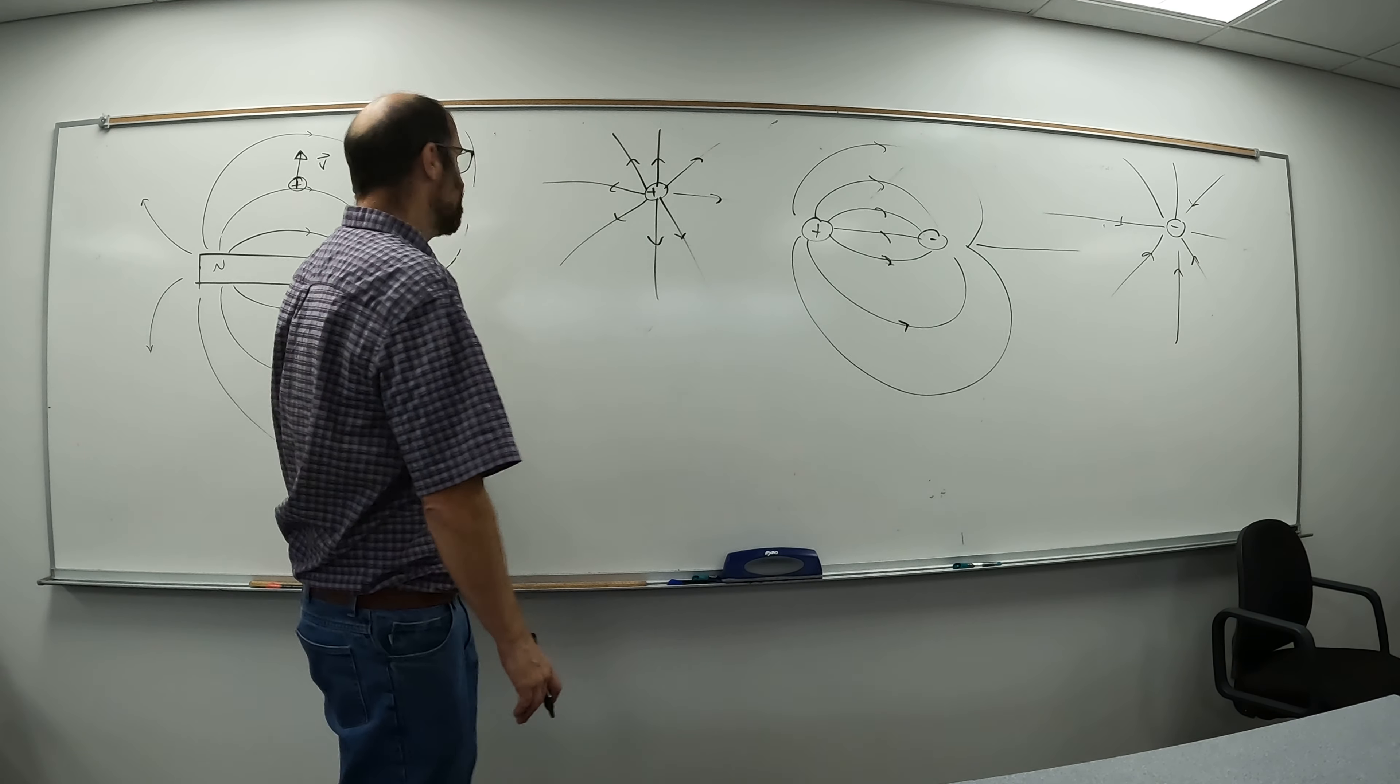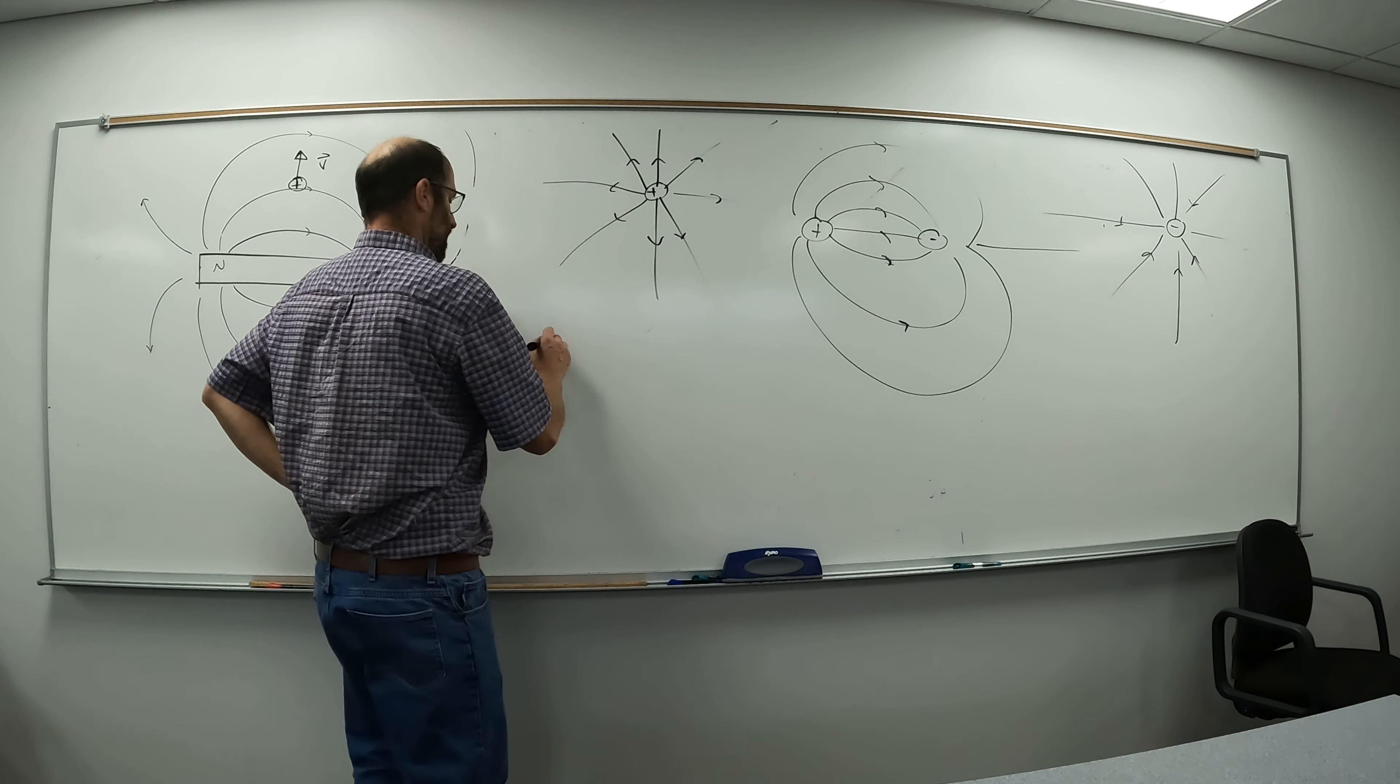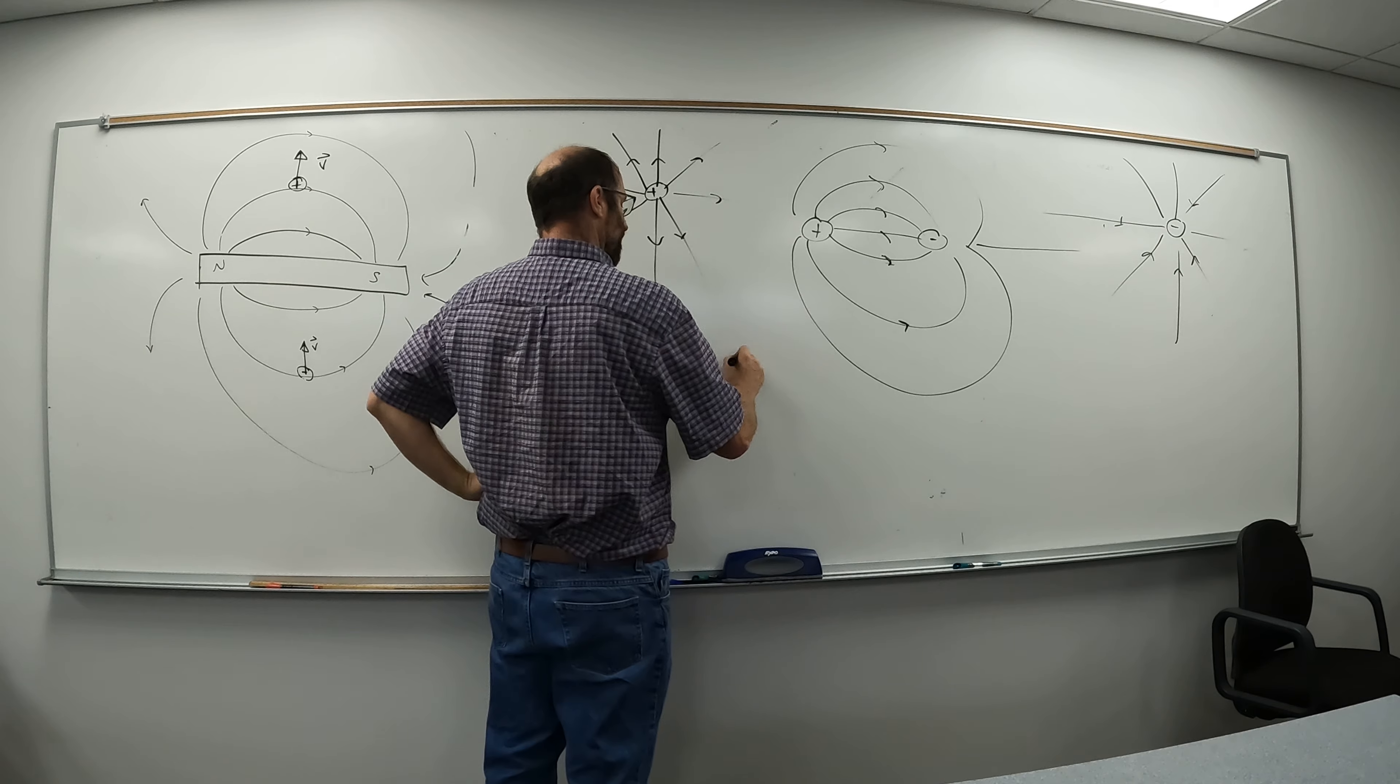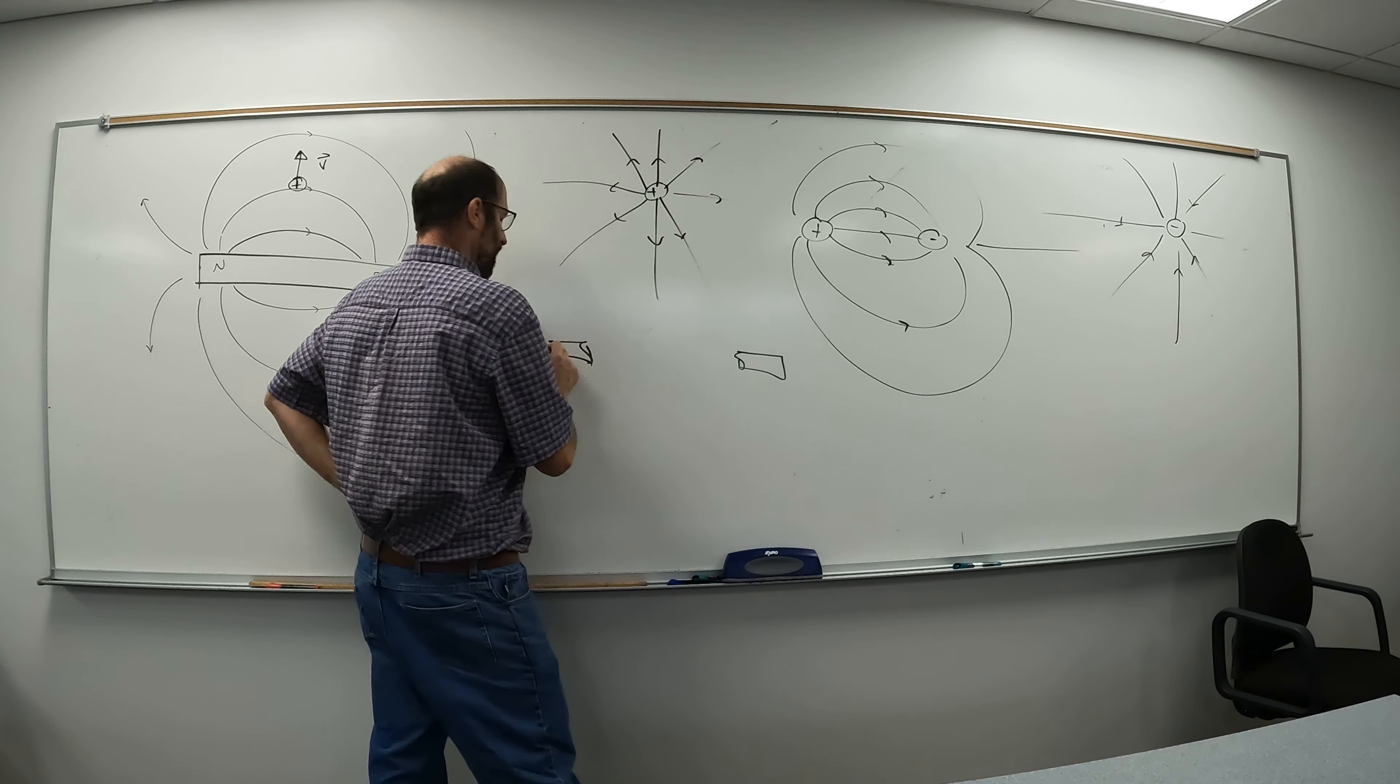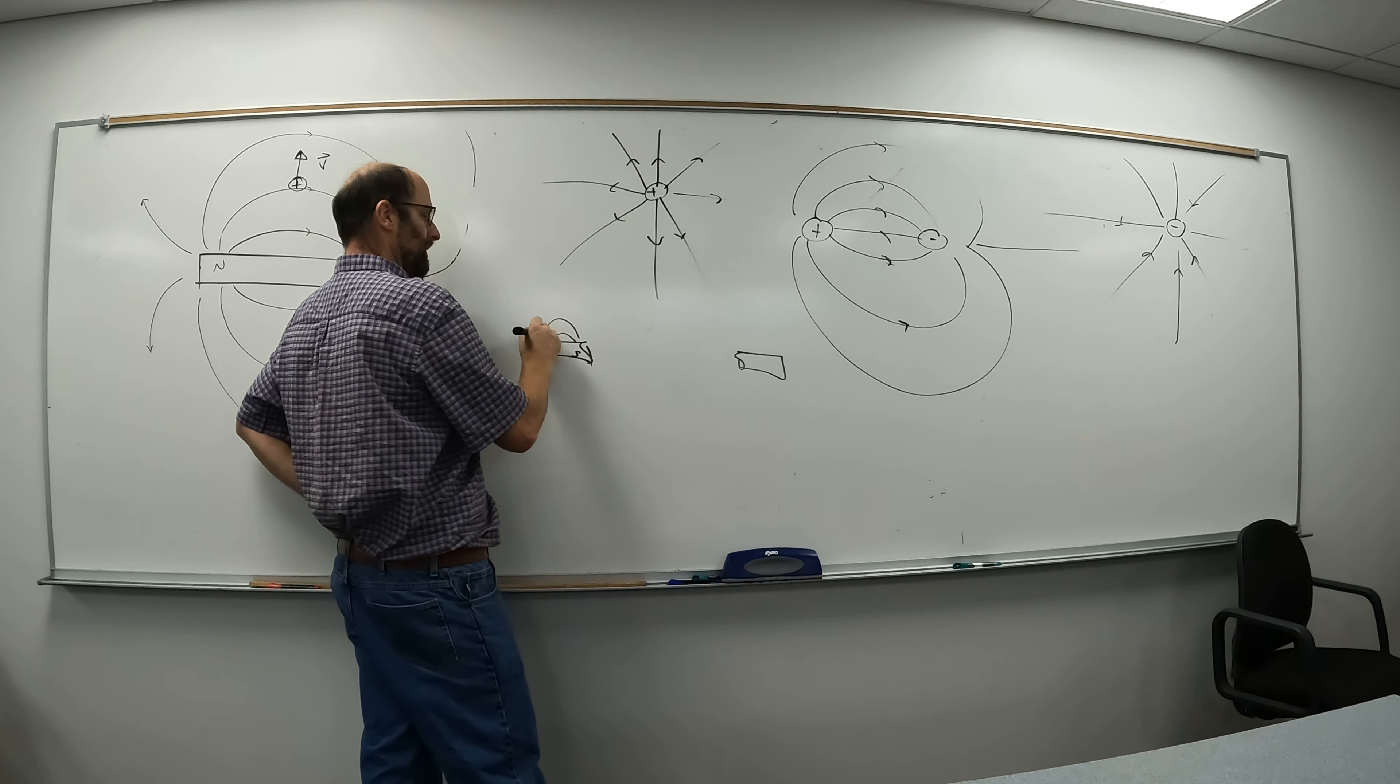Magnets don't work like that. If you take a magnet and you break it apart and you separate the parts, what you end up with is a pair of smaller magnets with field configurations that kind of look like this.